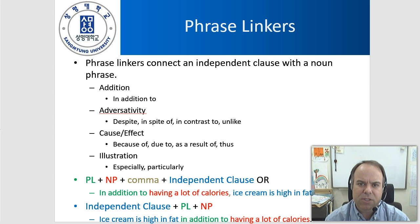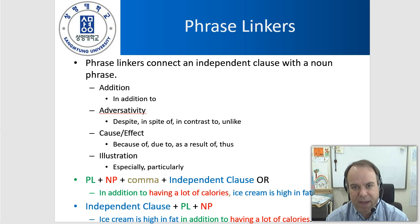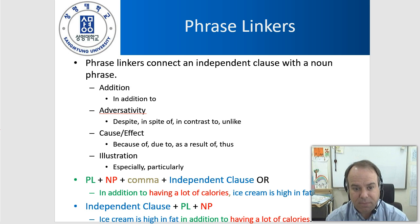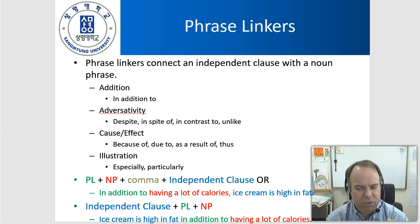You'll notice two phrase linkers that are very often misused: especially and particularly. Make sure that when you're using these, you're doing so with a noun phrase and not an independent clause. If you use them with an independent clause, they won't function as phrase linkers — they'll most likely function as adverbs to describe the verb. So there are two very different uses.